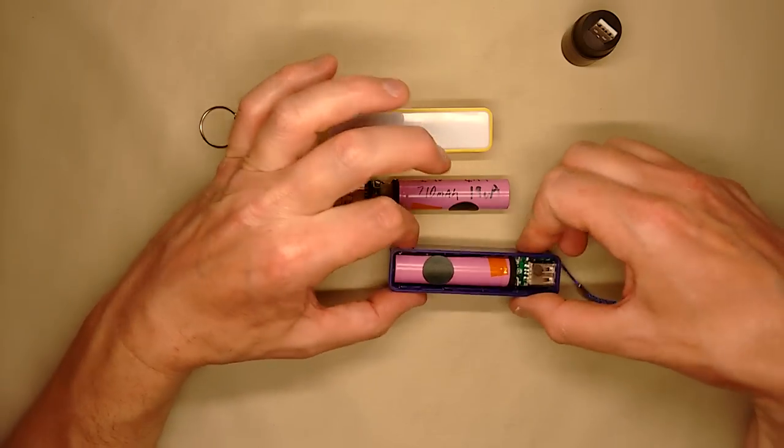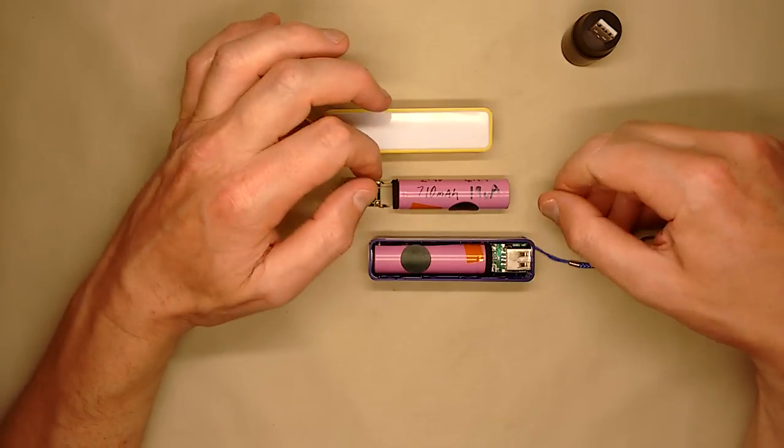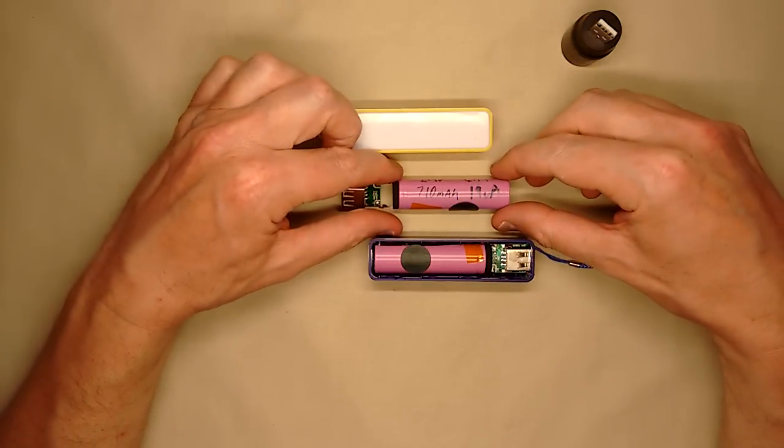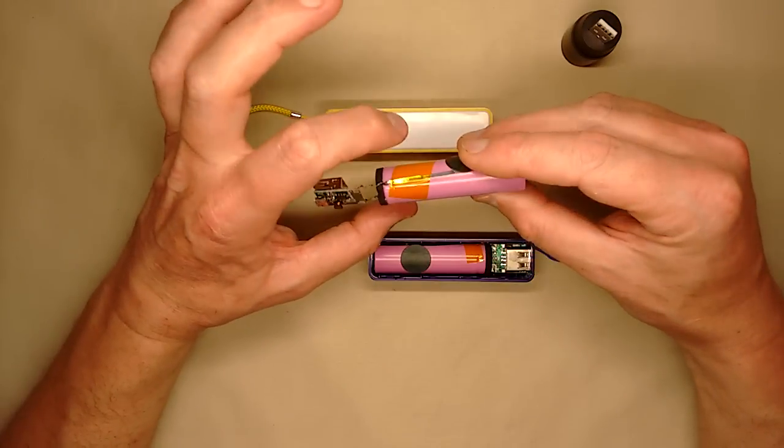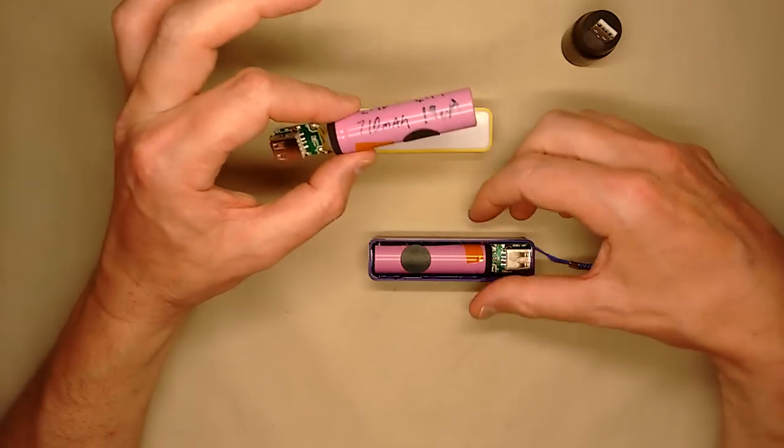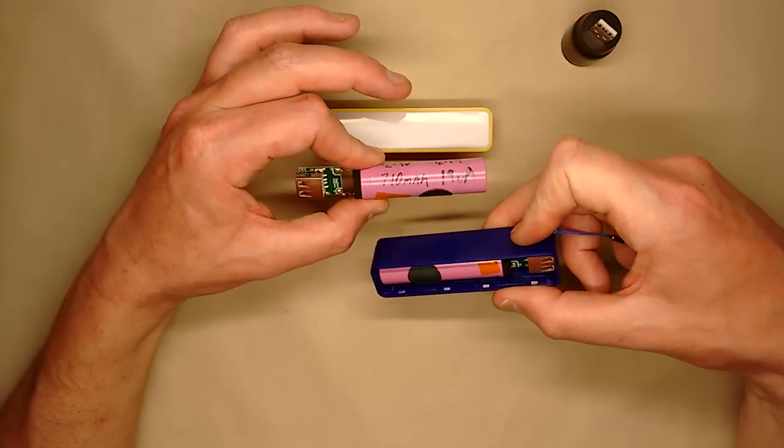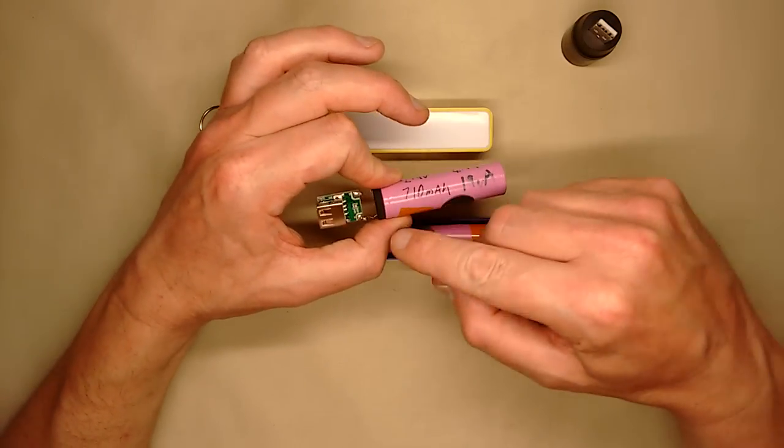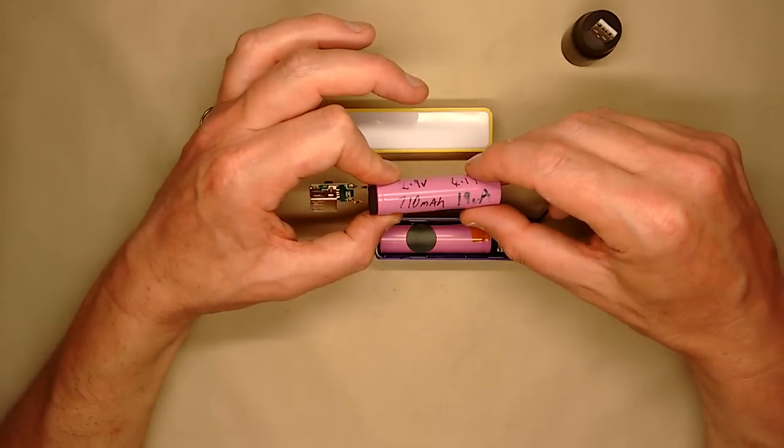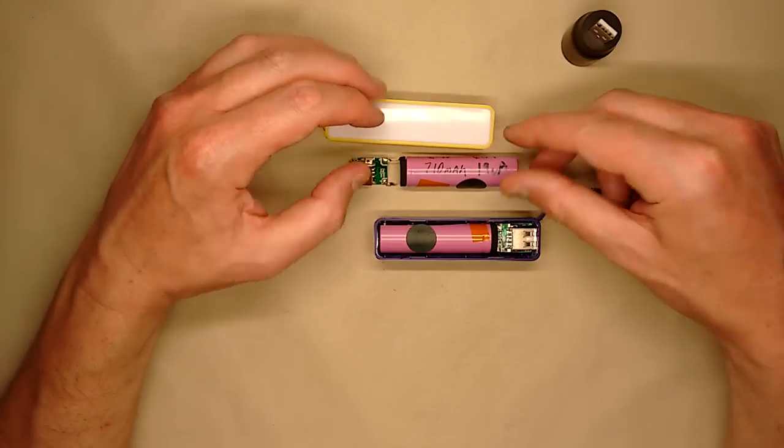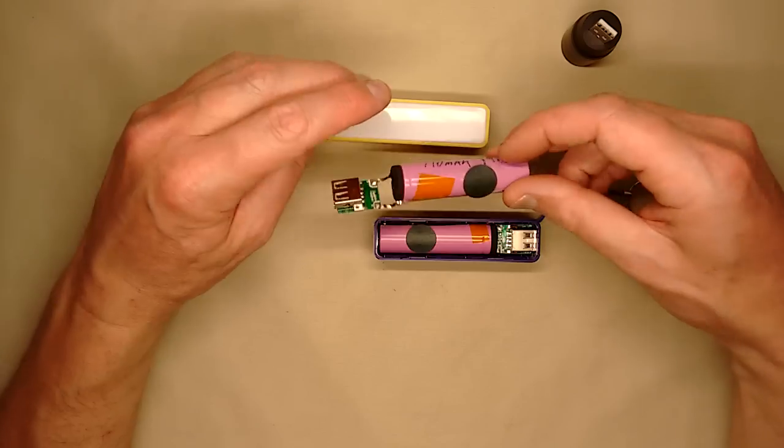However, these units have one slight drawback. Although they say it's a 1,200 milliamp hour cell that's inside, it's not. It's a random, anonymous cell, and they seem to measure at different values. This one came out pretty well. This one came out at 995 milliamp hour. This one didn't. This one came out at 710 milliamp hour, from being completely flat to being fully charged. So they're not, you know, huge capacity.